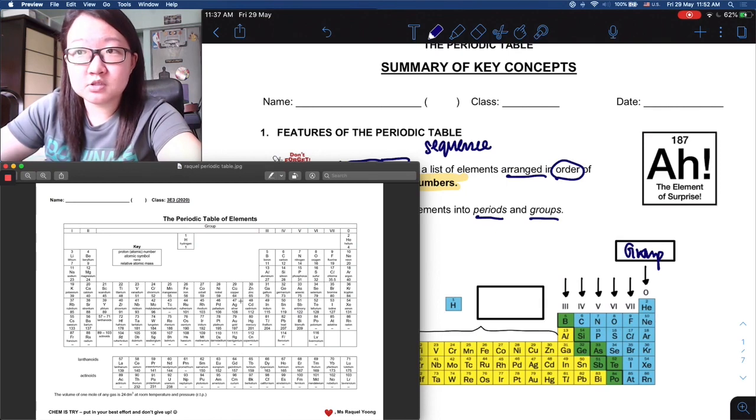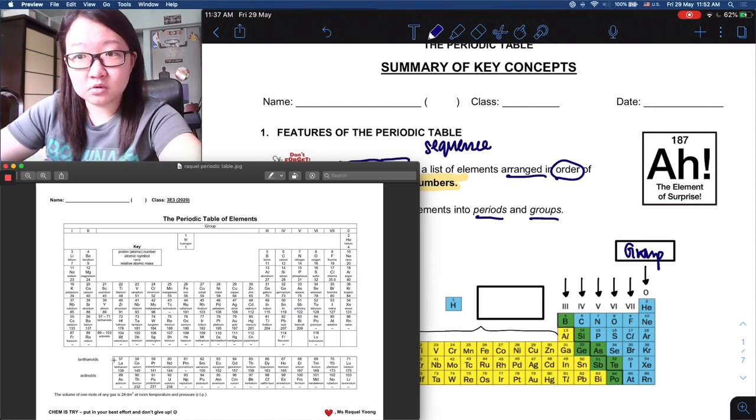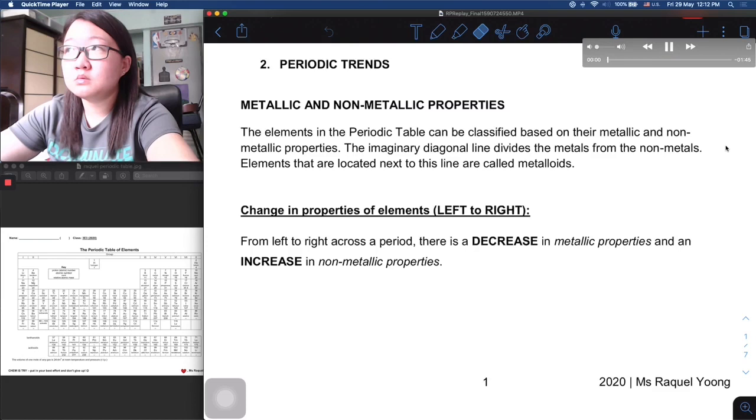Those are out of your syllabus but you do need to know certain elements from there. Namely, the more common ones will be copper, zinc, as well as silver and iron. Along the way we will let you know which are the ones that are more common and you will see them quite a bit.